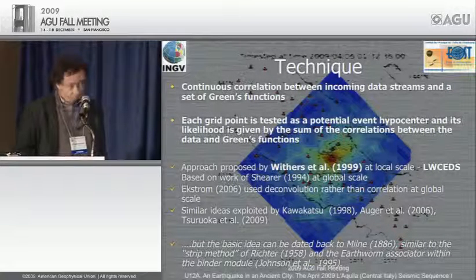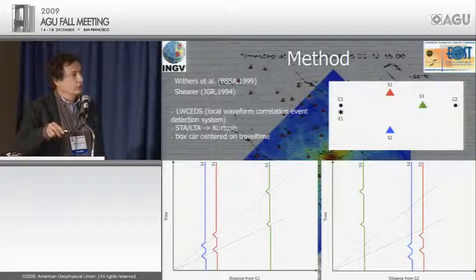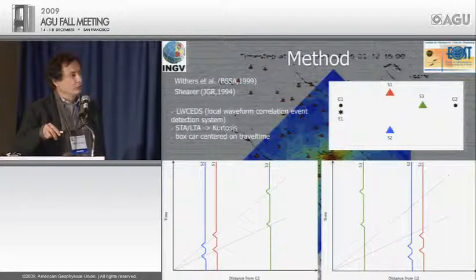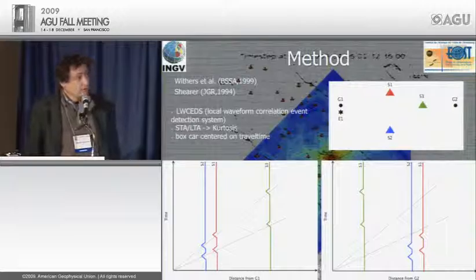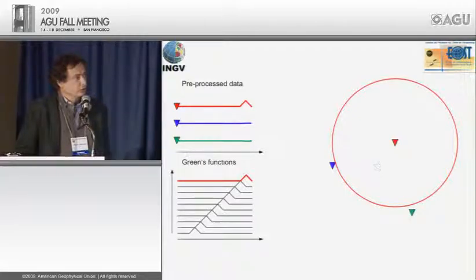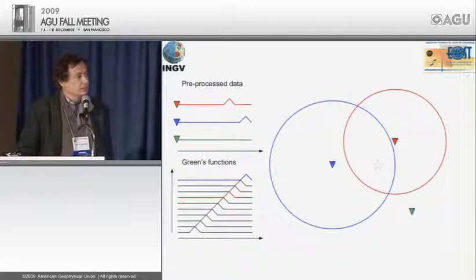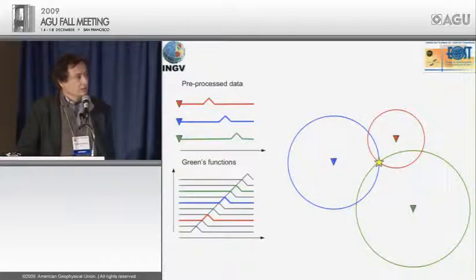In this example, earthquake E1 is recorded at three stations, and two potential hypocenter locations are tested. The point G1 gives a much better match with the observed P and S travel times. The method works by continuous correlation between pre-processed data and Green's functions: circles start at each station whenever an arrival is recorded, and you locate the earthquake when the maximum correlation level is reached.